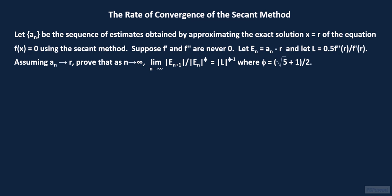In this lecture we are going to show a standard derivation for the convergence rate of the secant method, the only difference here being the manner in which we present the derivation, which will be in video format. Let a sub n be the sequence obtained by the secant method for approximating the exact solution x equals r of the equation f of x equals 0.